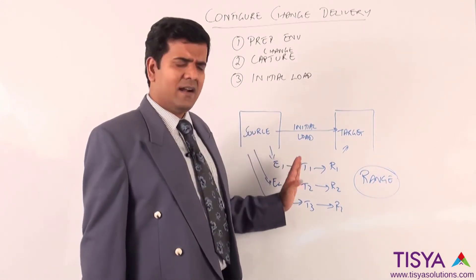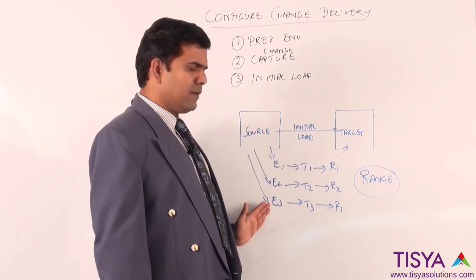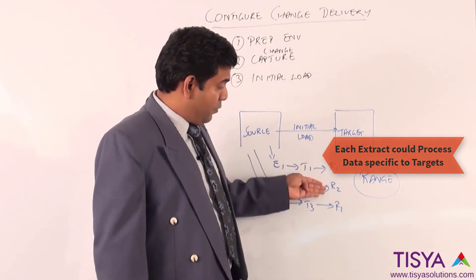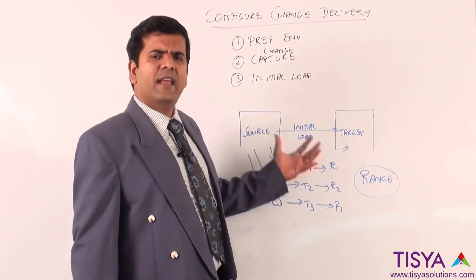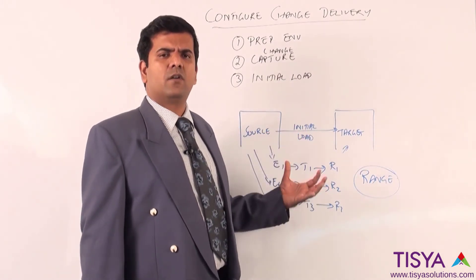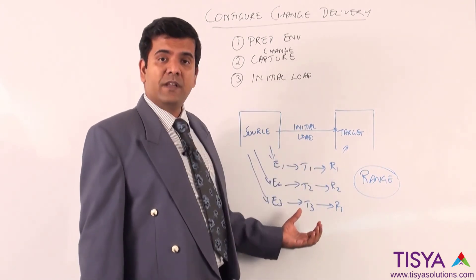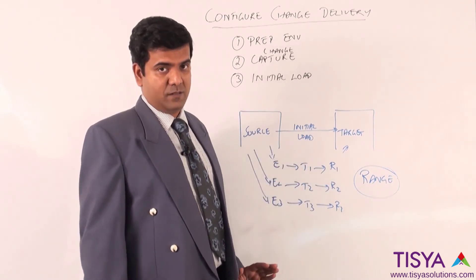Just wanted you to understand that in a source, I could have multiple extracts running which could go to the same target or to different targets. There are different ways and means in which you can configure a GoldenGate environment to use extracts, replicates, and pumps in between to optimize the entire process.